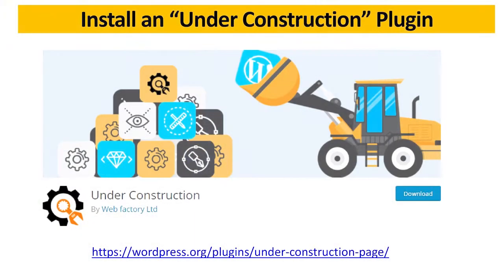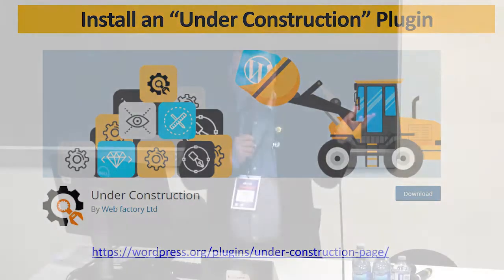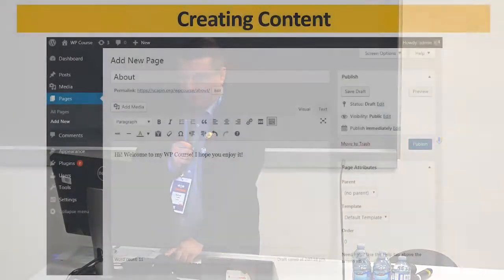After you install a theme and start working, please install an under construction plugin. Why? Because when people visit your domain, you don't want them to see unfinished work. You put a cover on the front page and choose a layout. For example, there's a great plugin called Under Construction that lets you choose different layouts, add social media links, or leave a space for an email so people can contact you. When you're ready to launch, you send an email to everybody and you've collected emails in the process.